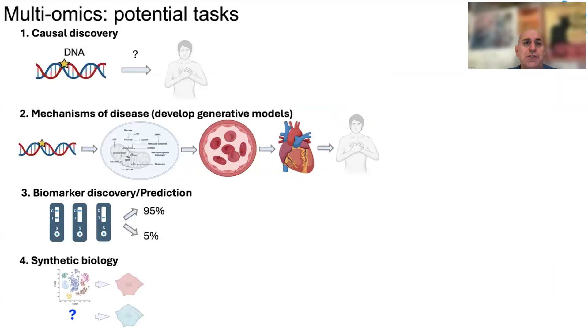There are a number of potential tasks that you can apply these multi-omic approaches to. Principally they would include causal discovery: Is this DNA mutation relevant? How does it cause disease? The second is mechanisms of disease, that's to say, can we build an explainable, understandable model of how disease is caused?